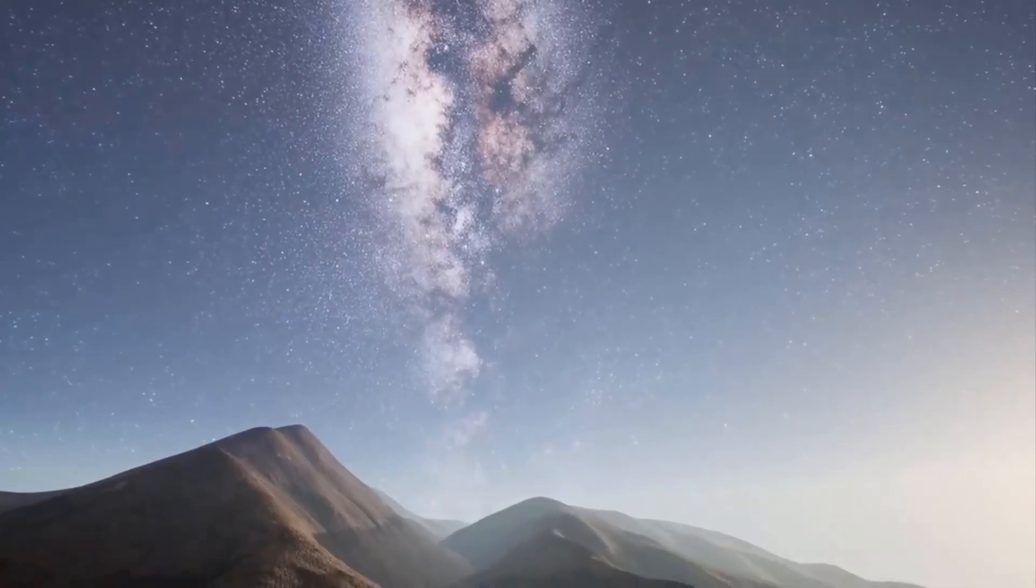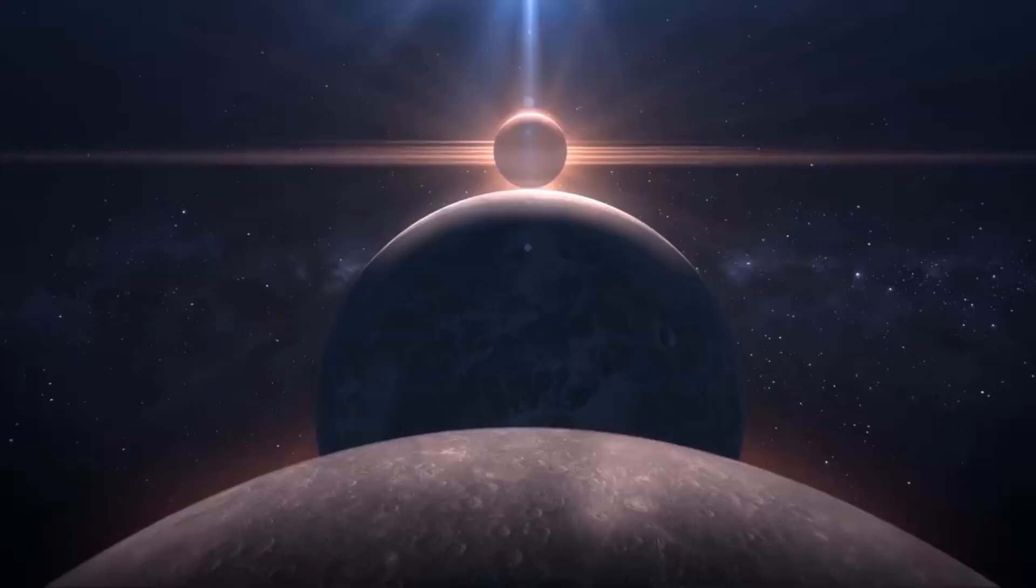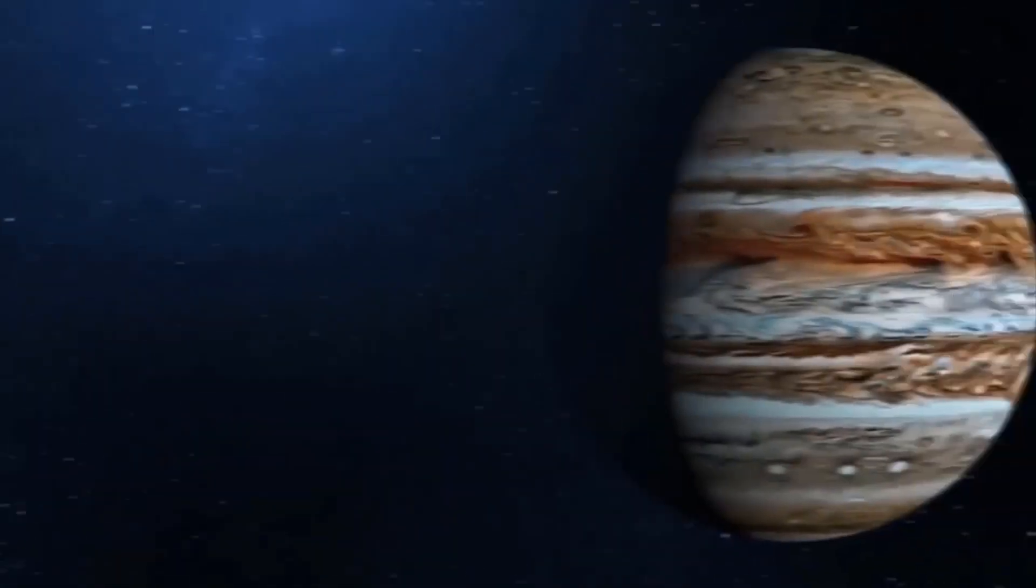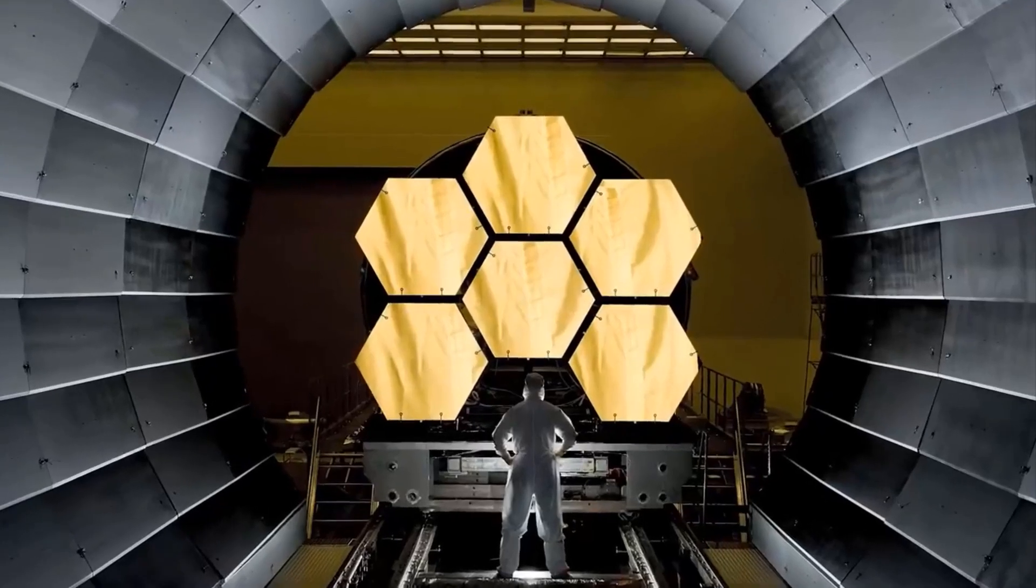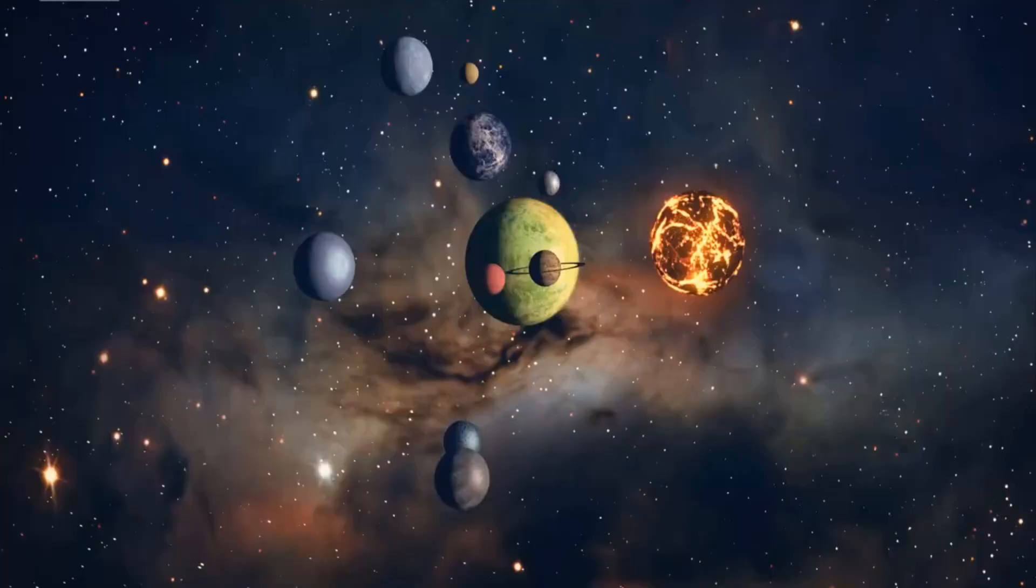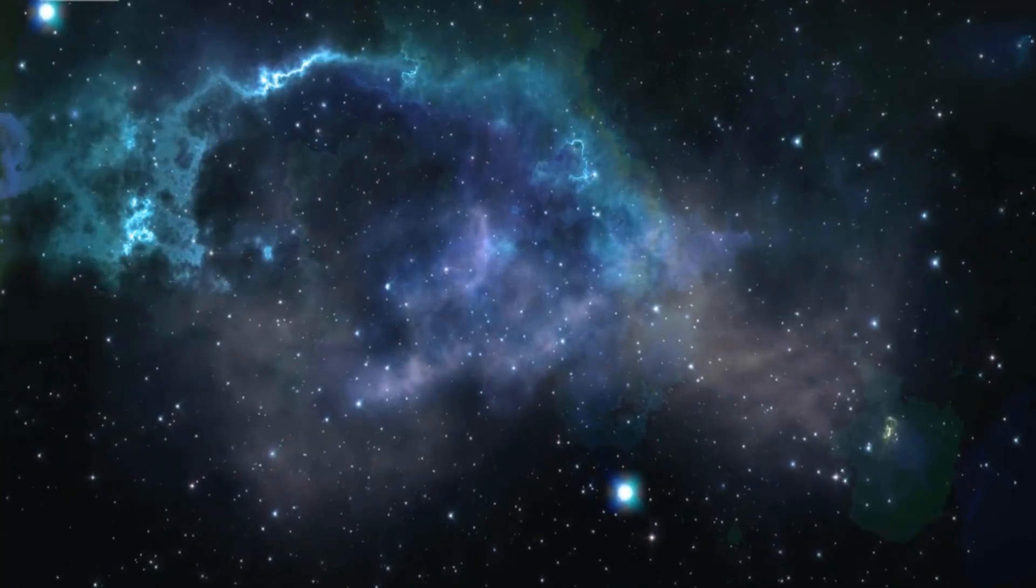A super habitable planet is classified as a world where the conditions are more suitable for both the emergence and sustainability of life. To identify a planet that fits these characteristics, it is important to look beyond what our definition of a life-sustaining planet is and instead consider what other biological life forms a planet may be suitable for.